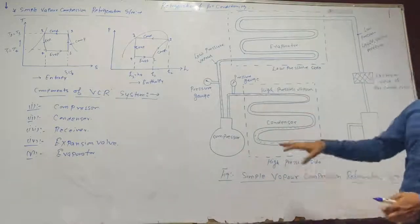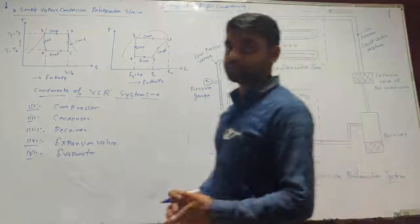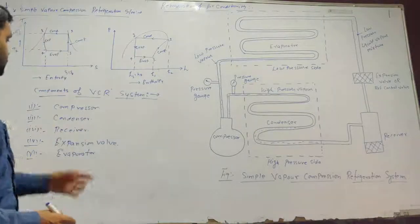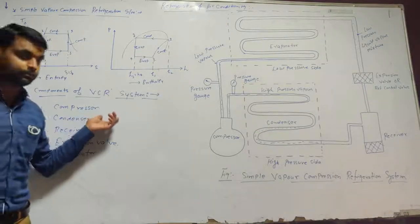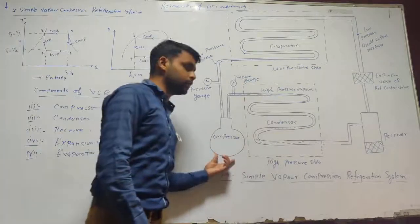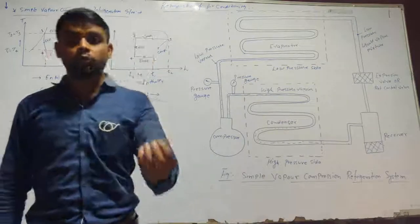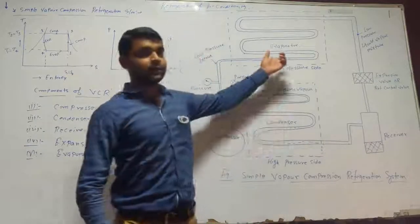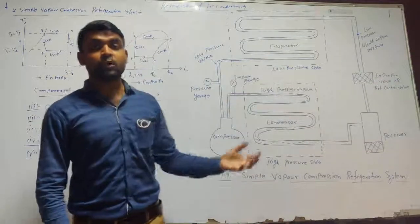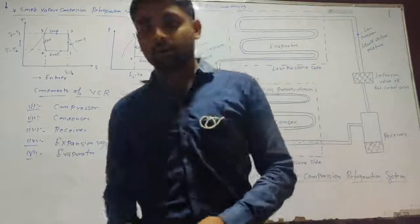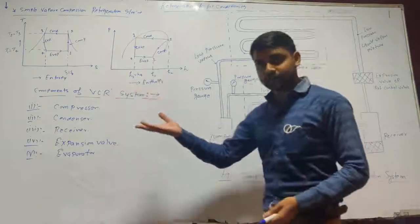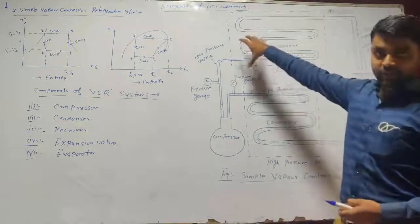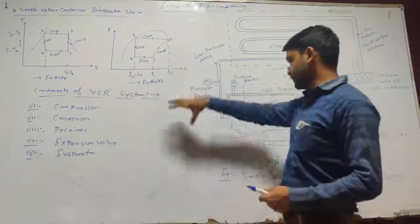Let's discuss the components of the vapor compression refrigeration system. If we talk about the compressor, what is the function of the compressor? It takes in low pressure, low temperature vapor refrigerant from the evaporator and compresses it, so that the temperature and pressure are increased.